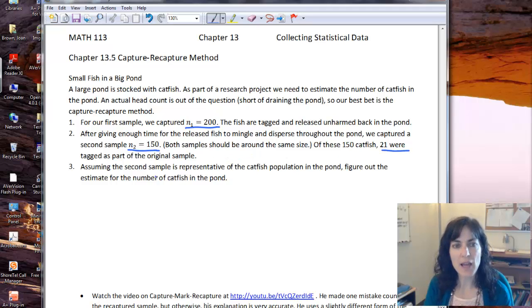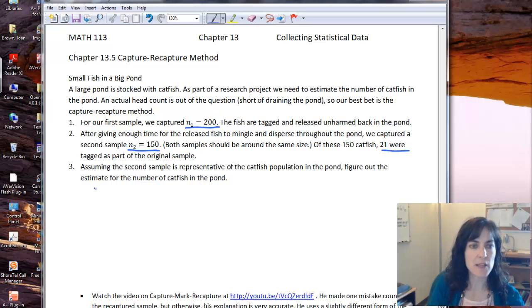So with that, we have one final thing. Assuming the second sample is representative of the catfish population in the pond, figure out the estimate for how many catfish we have. And so our formula looks something like this.